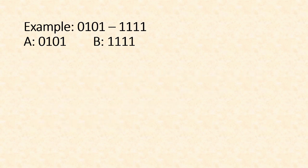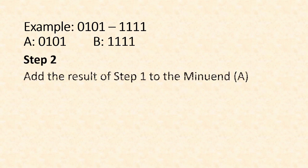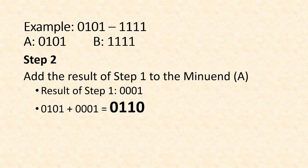This value now will be in step two. We will add that value to our minuend. The result of step one will be added to the minuend. In this example, our minuend is 0101. The result of step one is 0001. So we add it to our minuend 0101. The result is, if you perform binary addition, the result will be 0110.